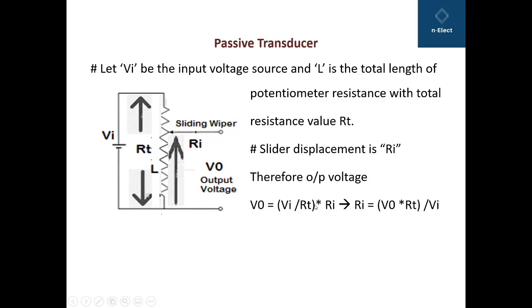So V0 equals VI/RT multiplied by RI. As you know from Ohm's law, V = IR, so this is I and this is R. So output voltage equals (VI/RT) × RI. Hence by adjusting this equation, we can get RI = (V0 × RT)/VI.